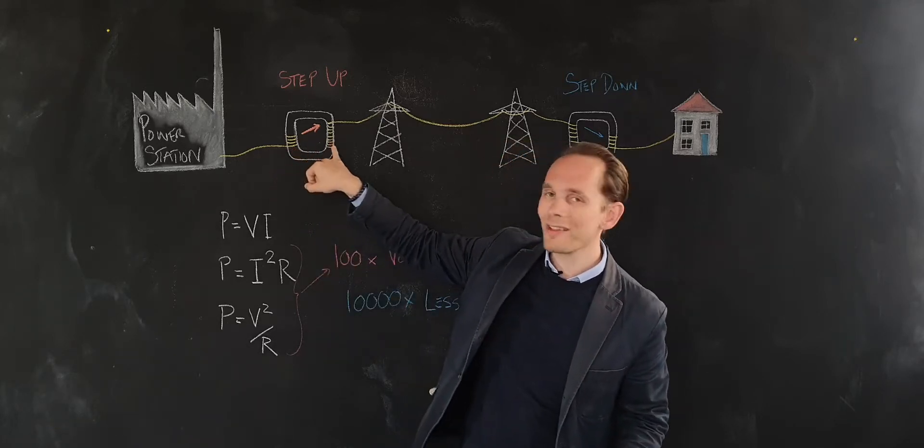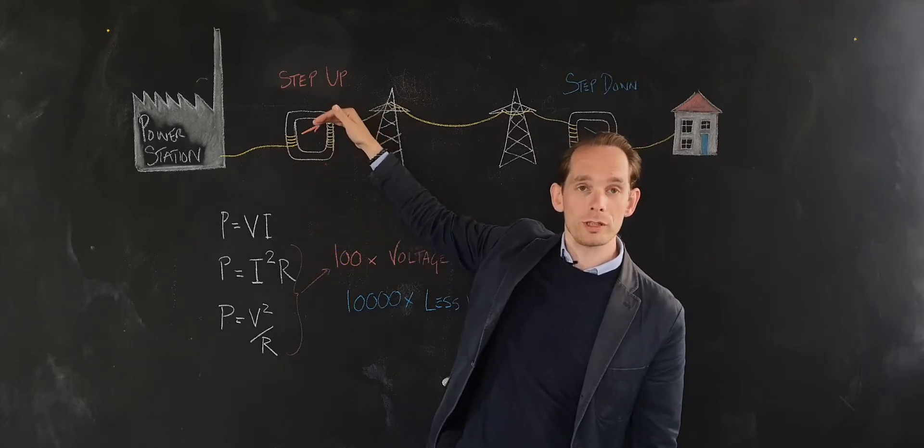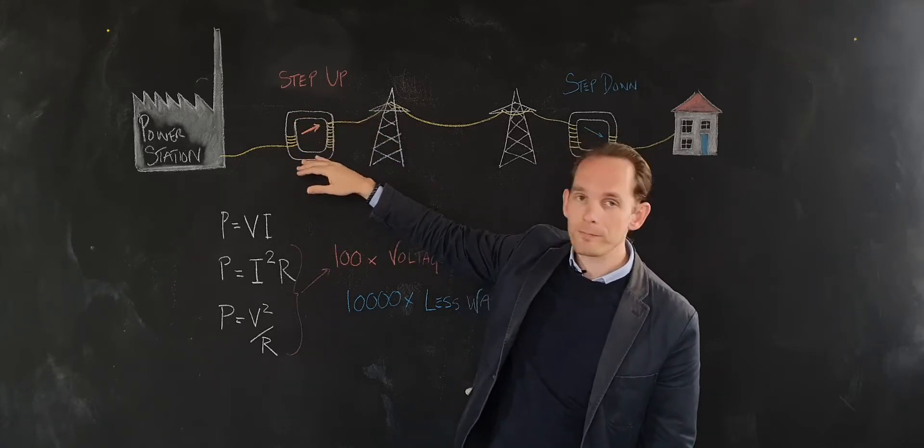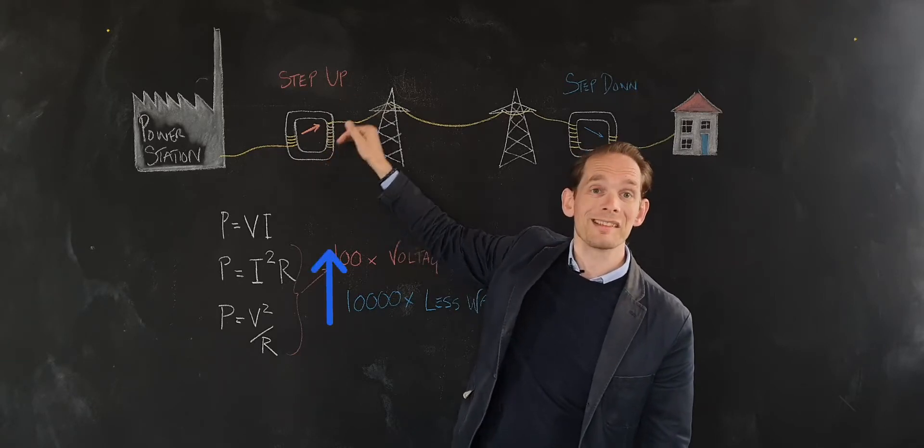When you have more turns on the secondary coil than the primary coil, that transforms the voltage to a higher voltage by straight ratio. So more turns on the secondary coil means a step-up in voltage.